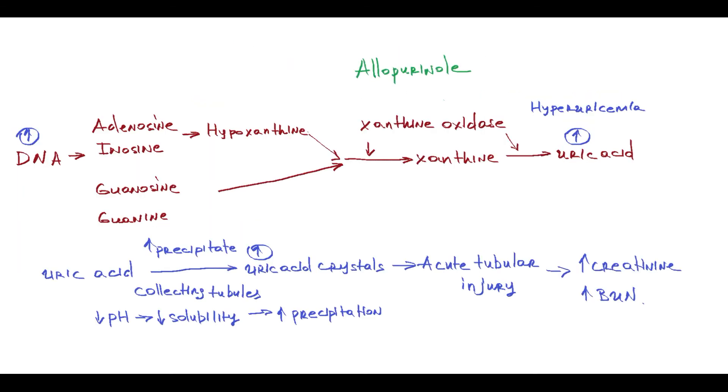Allopurinol is a xanthine oxidase inhibitor. With inhibition of xanthine oxidase, conversion of hypoxanthine to xanthine and xanthine to uric acid is decreased. So uric acid formation will decrease, but the level of uric acid precursors will increase. The logic is that hypoxanthine and xanthine are more soluble than uric acid. Because they are more soluble, their precipitation rate is lower, so the lower will be the rate of crystal formation.